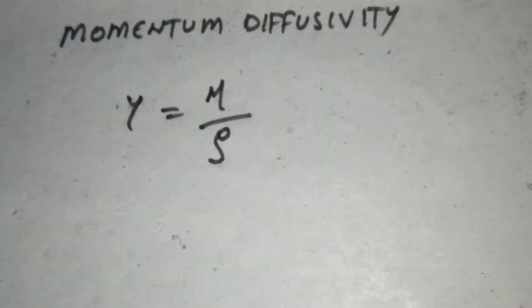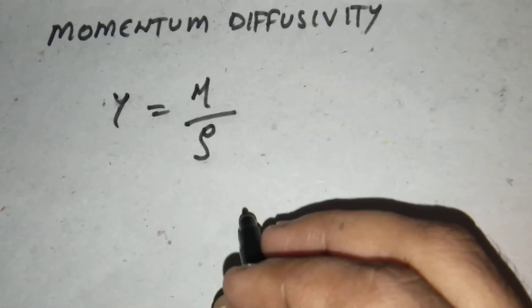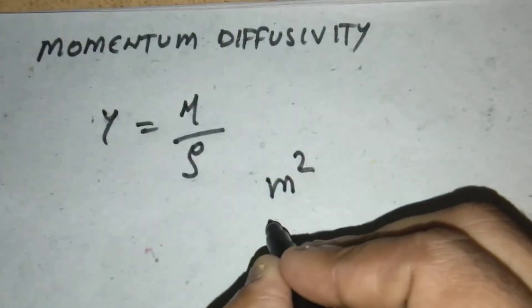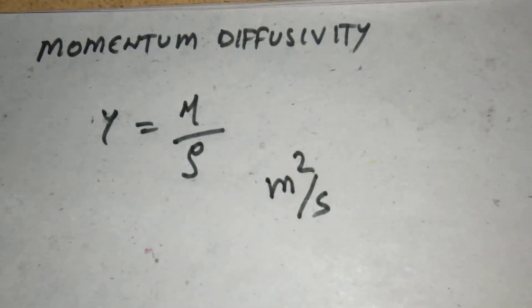And what is the unit of momentum diffusivity? It is meter square per second.